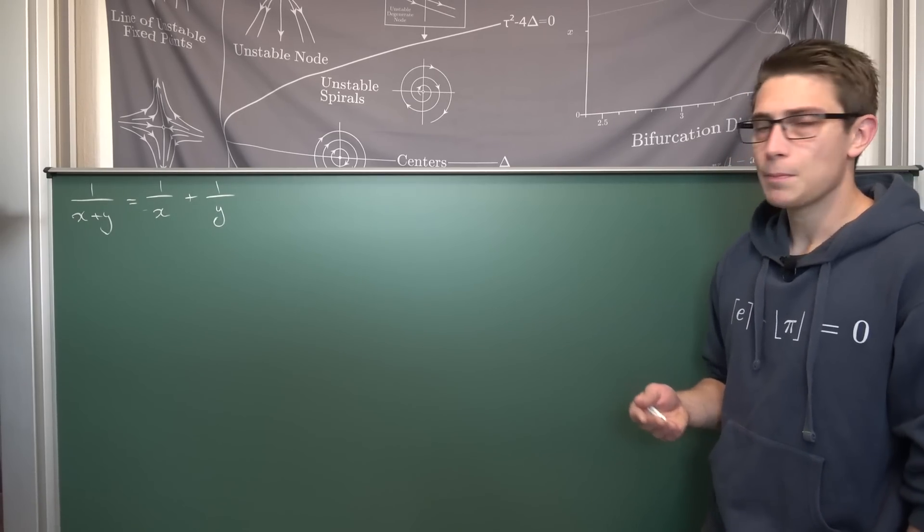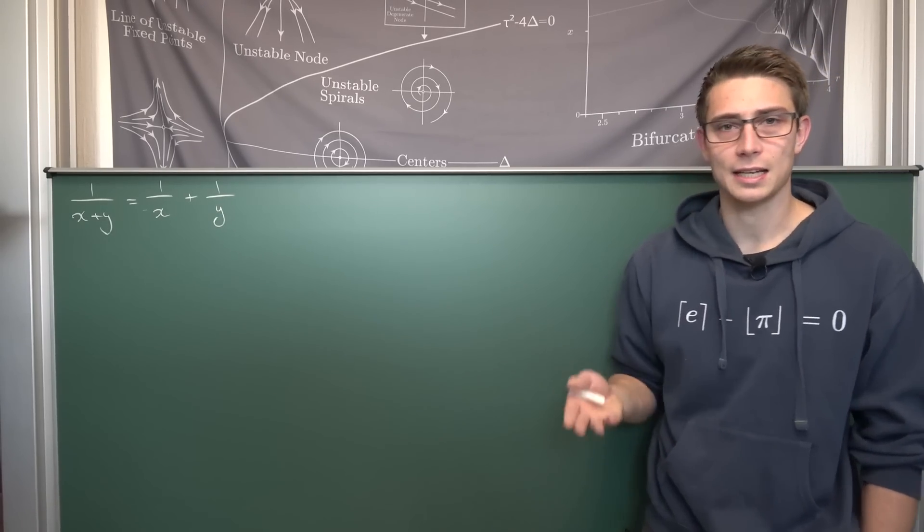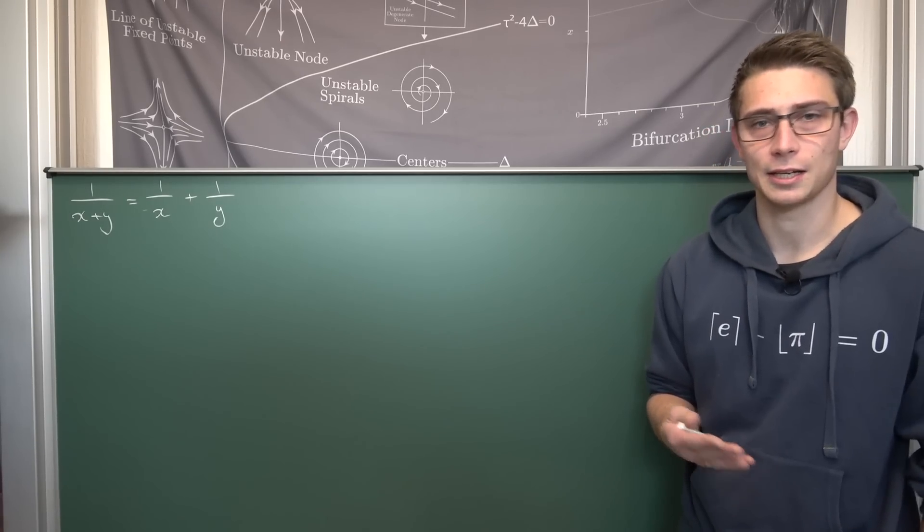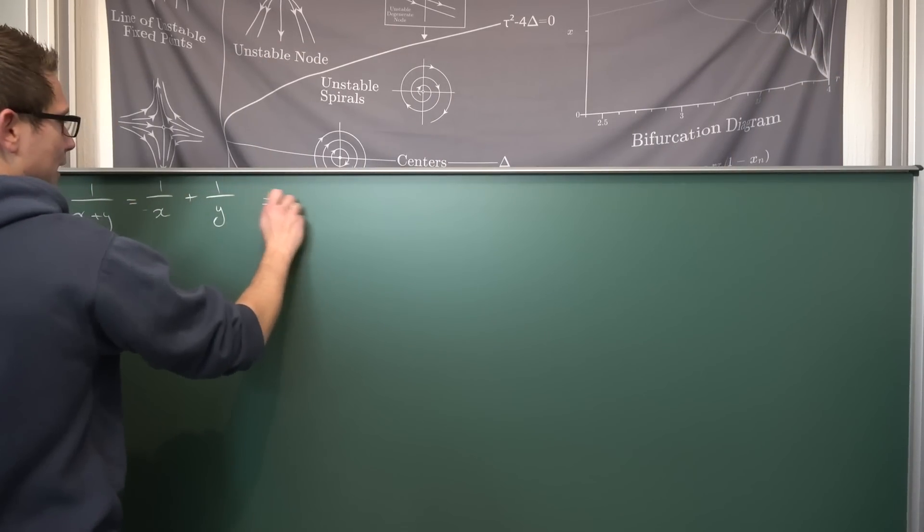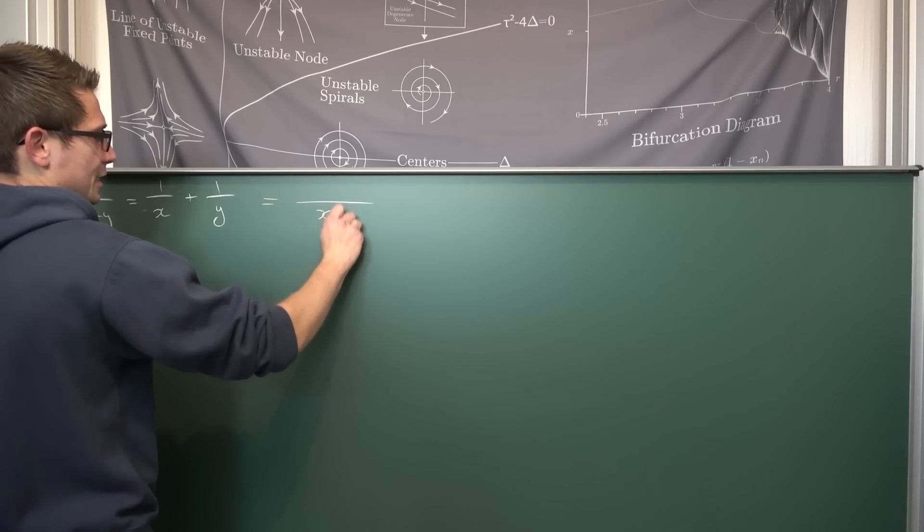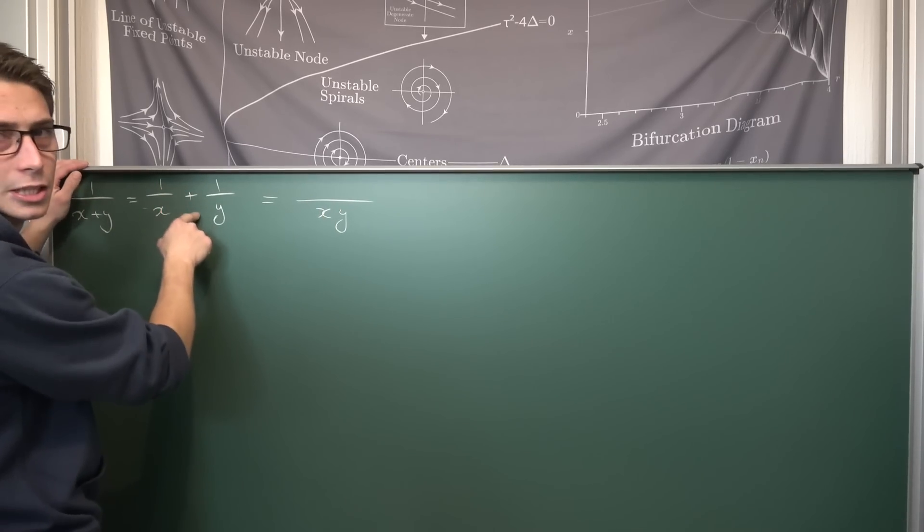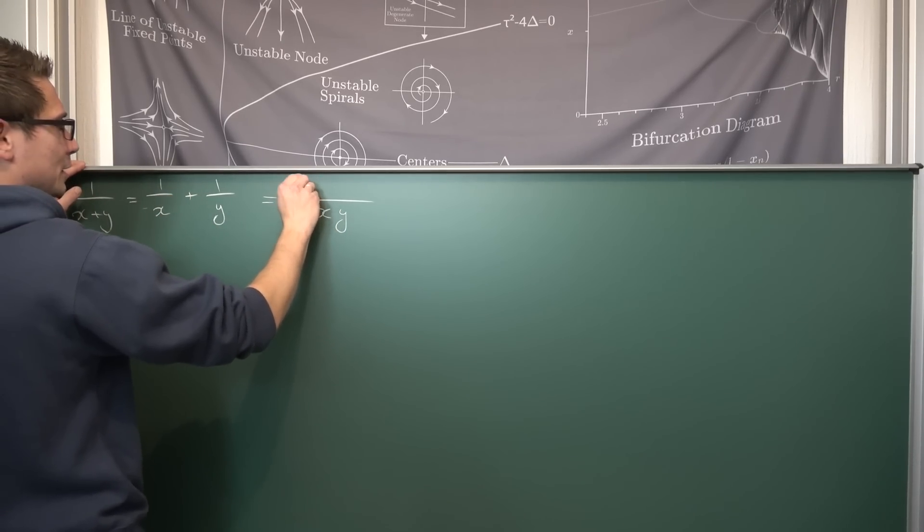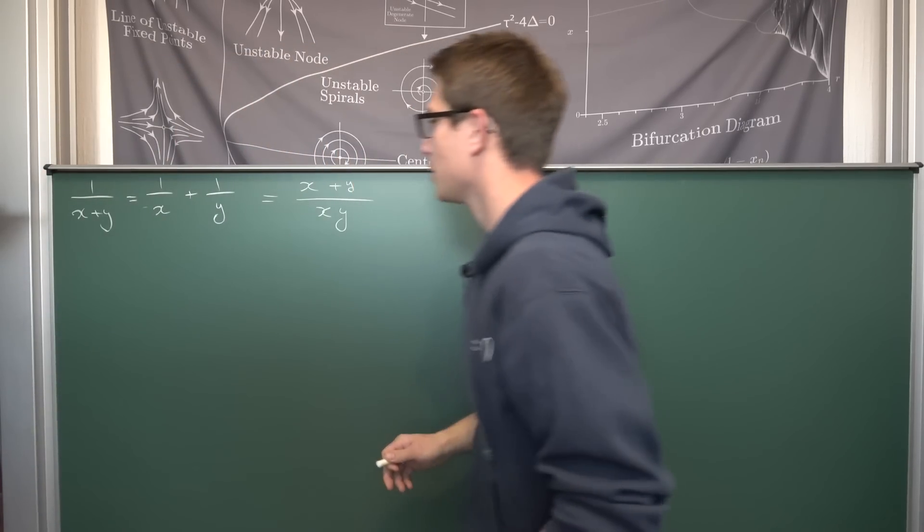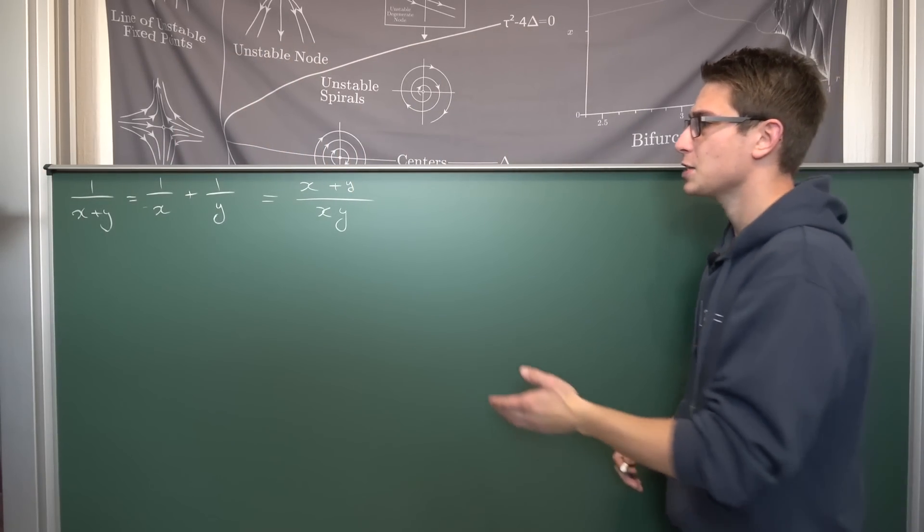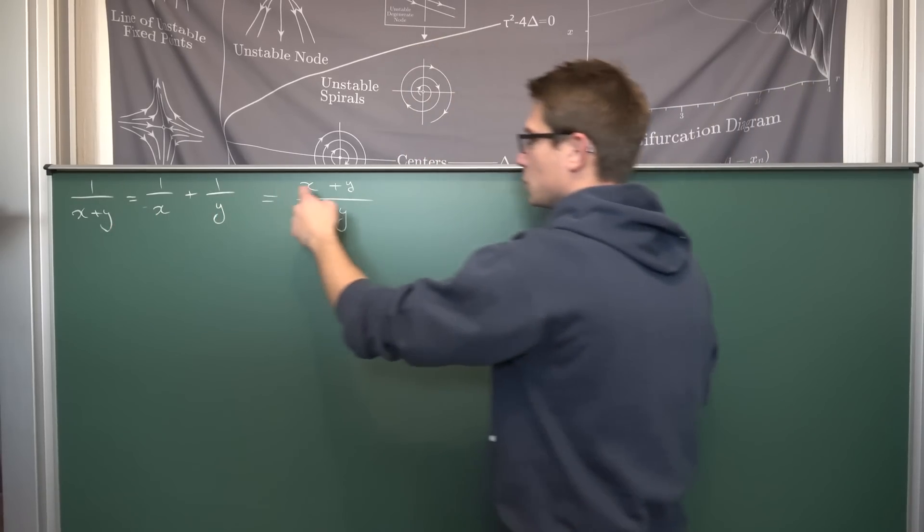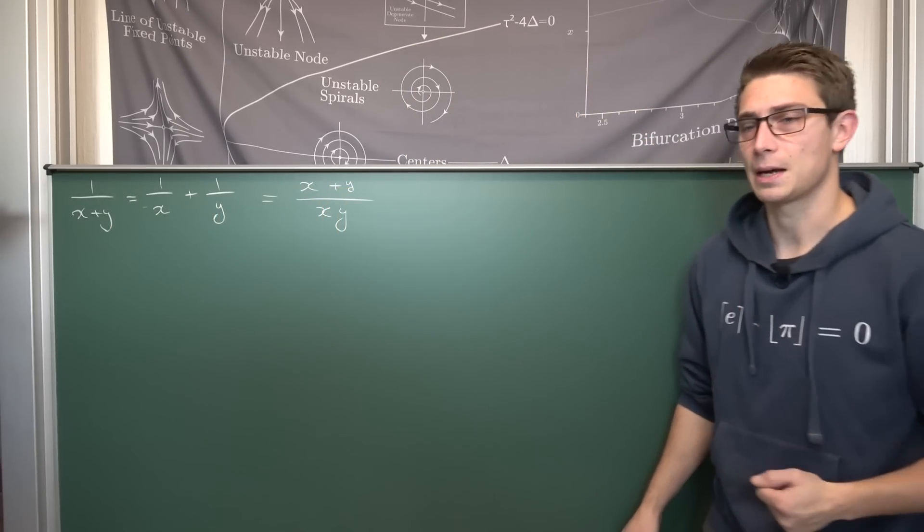So at first the most logical step to proceed is to just add the fraction together on the right hand side at first. Getting the common denominator is going to result in xy. And up here we are going to just expand the fractions by respectively x plus y. Okay, thus far thus good. So we have a new equivalence relation namely that 1 over x plus y is equal to x plus y over x times y.